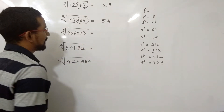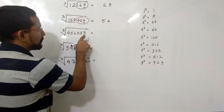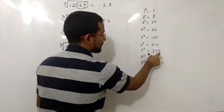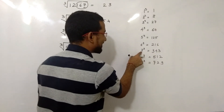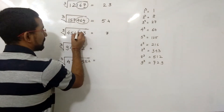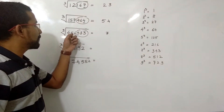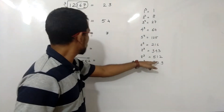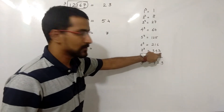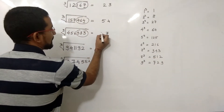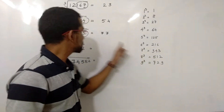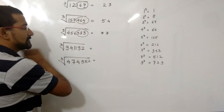Now the next example: cube root of 456533. The unit place value is 3. In 343, the unit place value is 3 and it is the cube of 7, so the unit place value here will be 7. We leave out the last 3 digits; remaining is 456. 456 is not a perfect cube, but less than 456 is 343, which is the cube of 7. So the answer is 77.